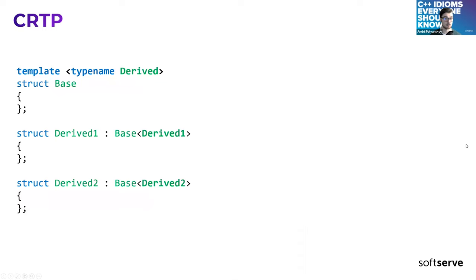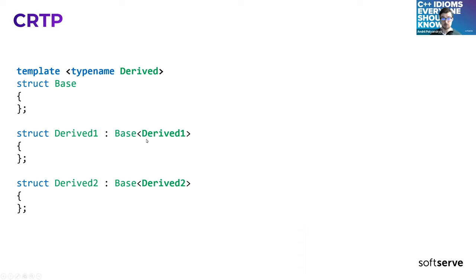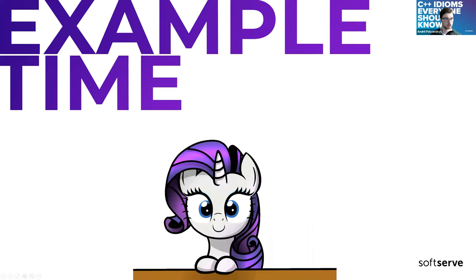The structure is the following: we have the base class, it should be a template base class, then a few derived classes which put themselves into the template parameter like this. It may look like it doesn't really make sense, but let's see some examples quickly.